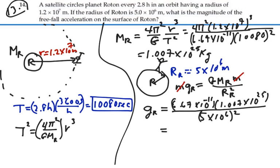so if I put those numbers in I got the mass of Roton times 6.67 times 10 to the minus 11 divided by 5 times 10 to the 6 square that I got 26.86